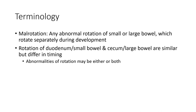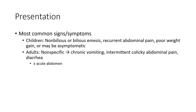Abnormality of rotation may be either symptomatic or asymptomatic. Most common signs and symptoms in children include non-bilious or bilious vomiting, recurrent abdominal pain, failure to thrive, or may be asymptomatic.